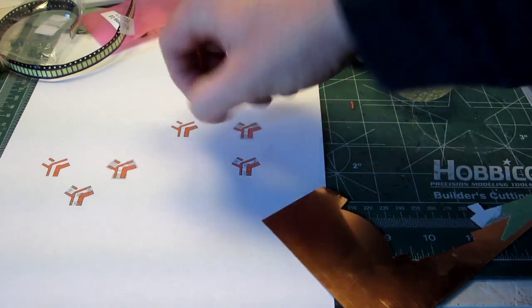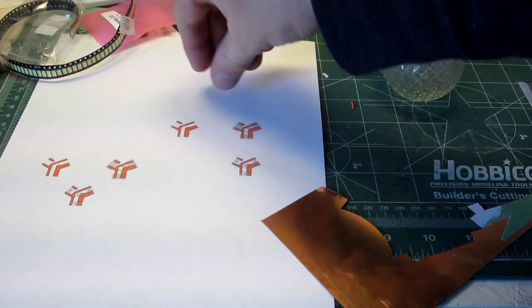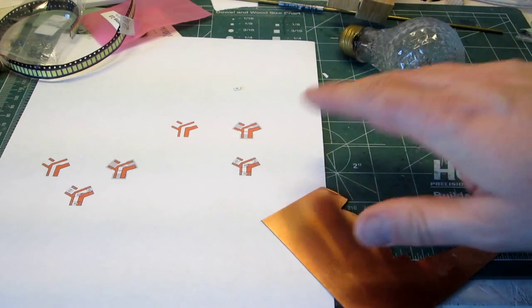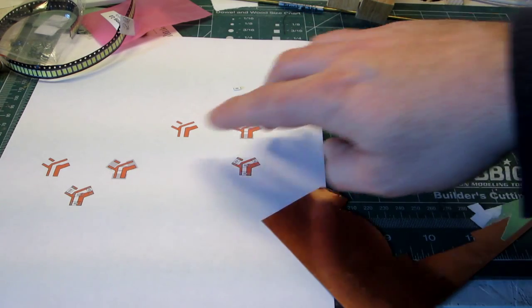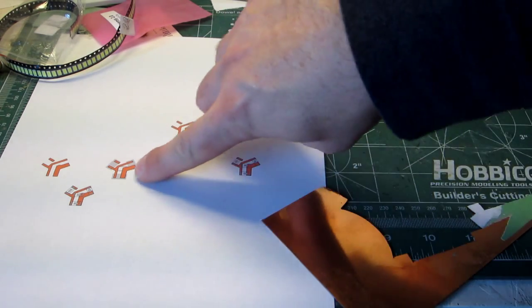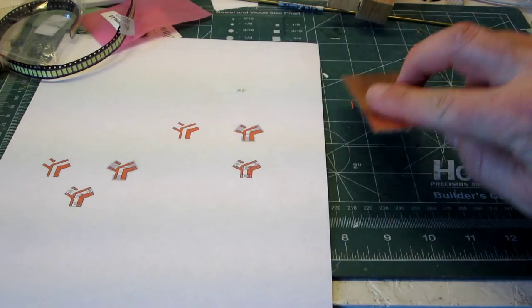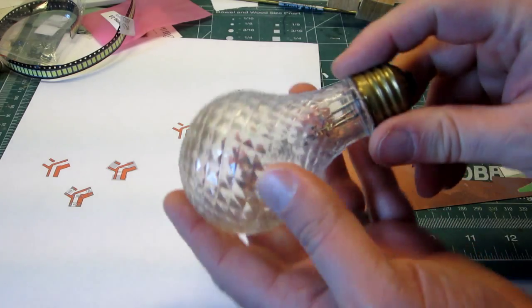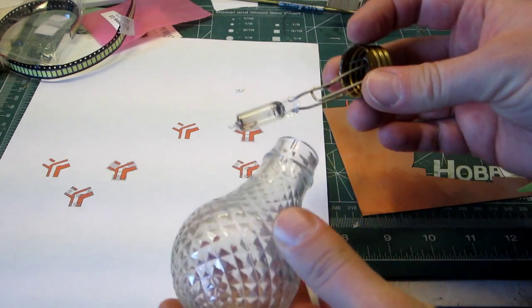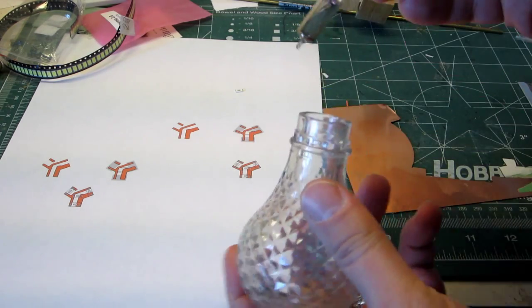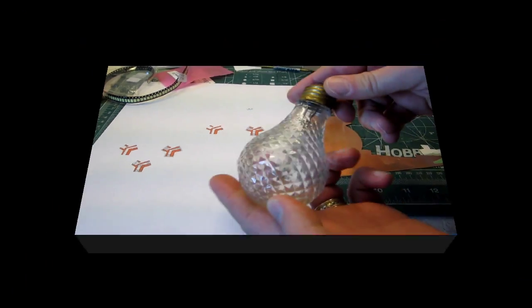But of course I can't just make them work like that. So what I'm going to do is I've designed a light that's going to have four of these mounted on a piece of strategically cut copper. I'm going to put that inside of this burnt out halogen bulb. That's going to be my light.